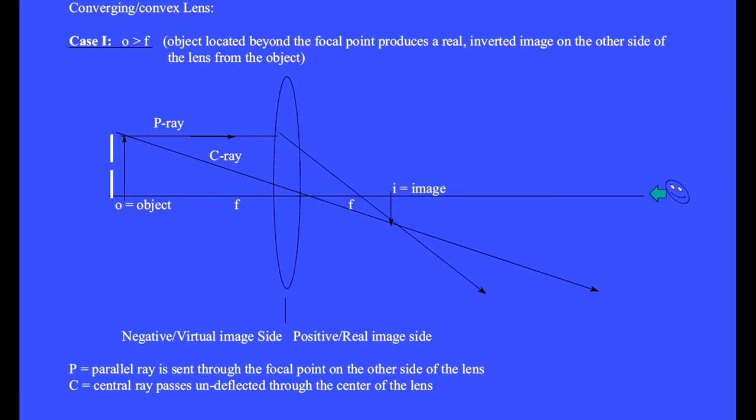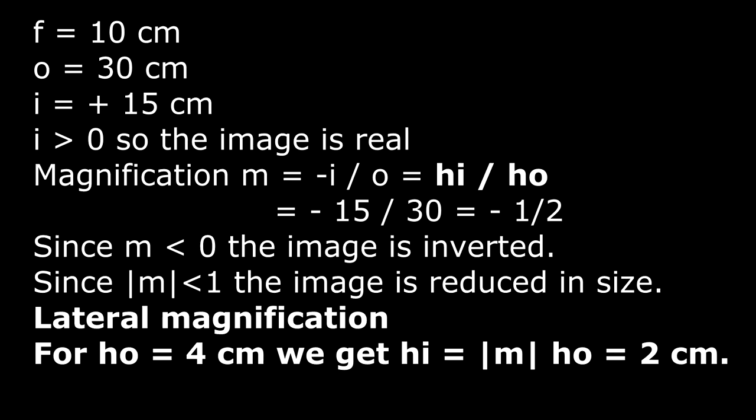The object had this height and the image has this height. The so-called lateral magnification is equal to the height of the image divided by the height of the object. We had calculated the magnification to be minus 1 half — that's also the ratio of image and object heights. If the object height is 4 cm, then the image height will be 2 cm.